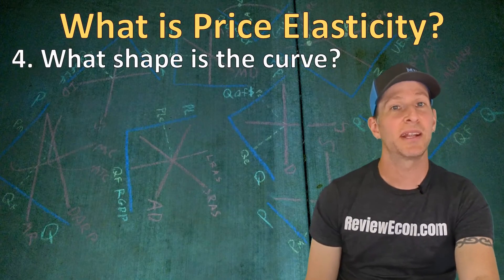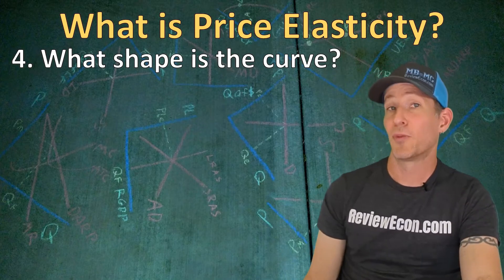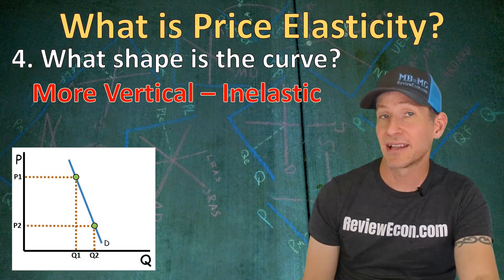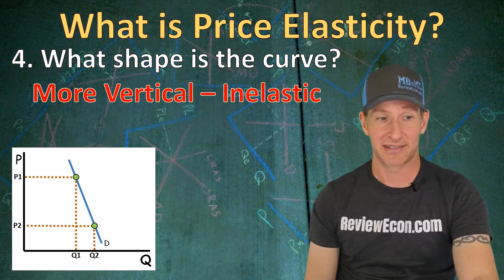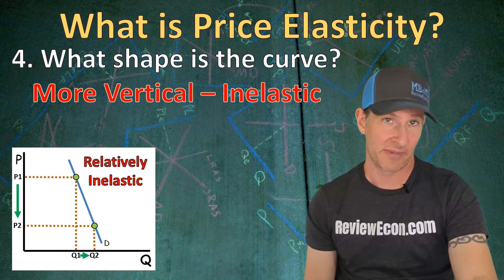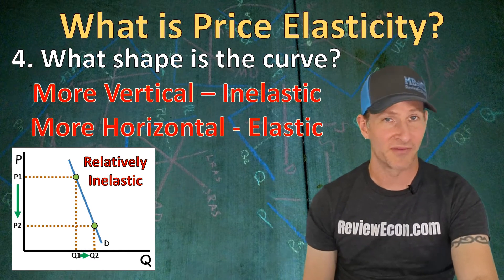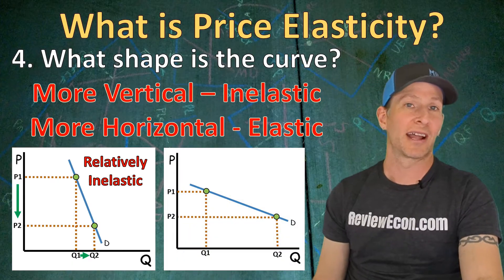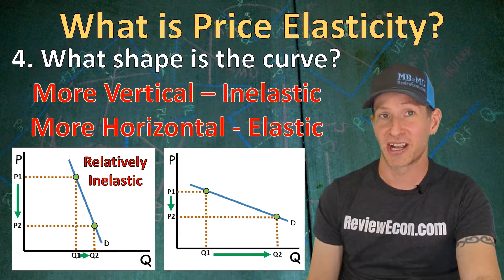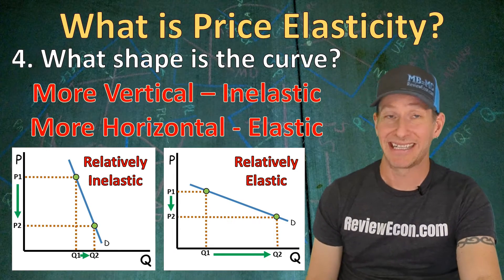The fourth test for determining the price elasticity of demand is the shape of the demand curve itself. The more vertical a demand curve is, the more inelastic the price elasticity of demand — a large change in price causes only a small change in quantity demanded. If a demand curve is more horizontal than vertical, it is more likely to be elastic: a small change in price causes a large change in quantity demanded.